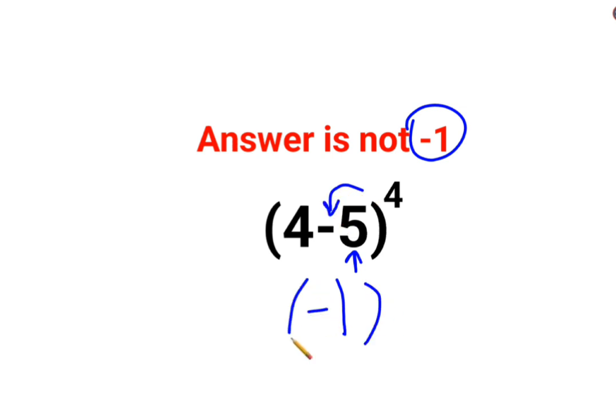So here the answer will be (-1) raised to 4. Now whenever you have an index, that means you need to multiply that number 4 times. Here we raised to 4, that is why we will multiply minus 1 with itself 4 times.